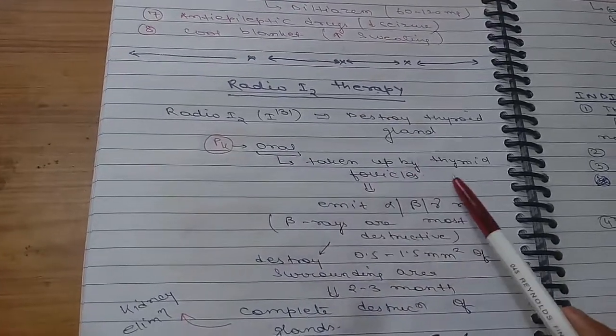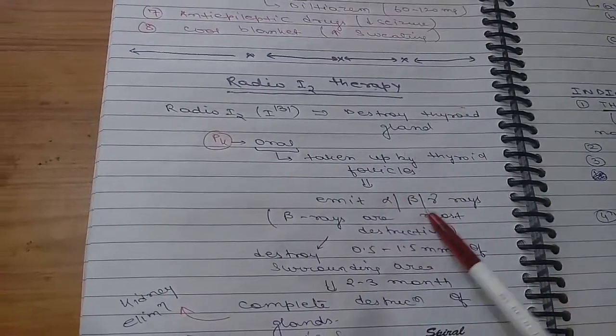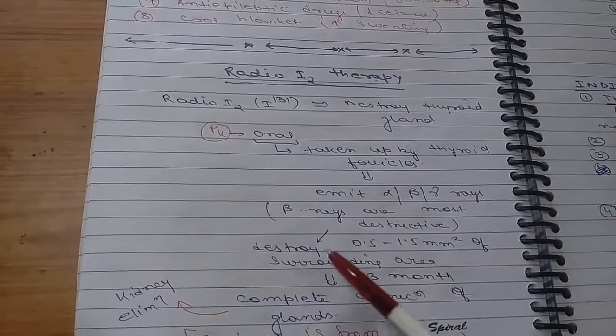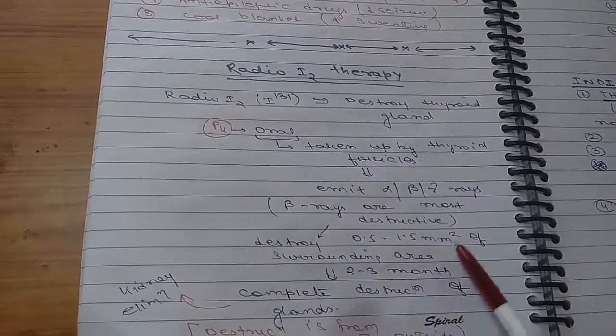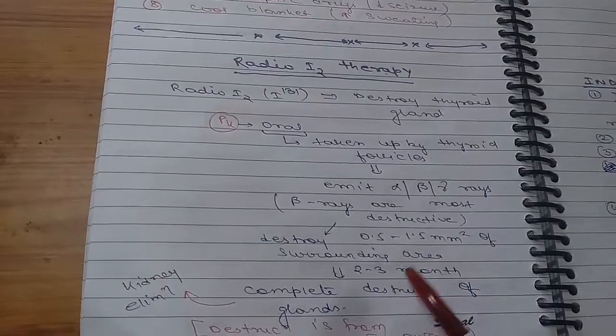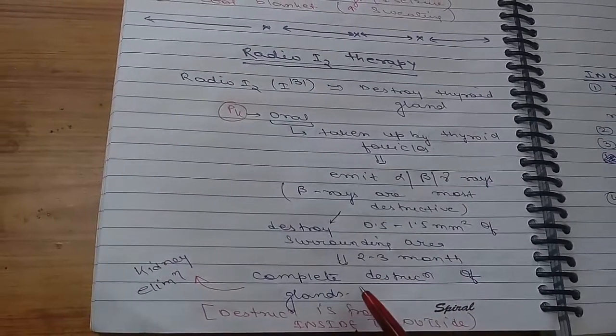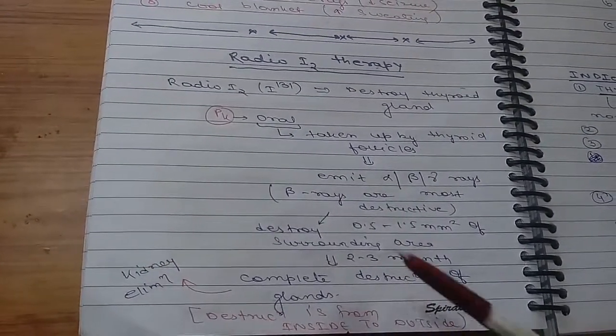Pharmacokinetics: it is given orally. It is taken up by thyroid follicles. It emits alpha, beta, and gamma rays. Beta rays are the most destructive and will destroy 0.5 to 1.5 millimeter square of surrounding area.